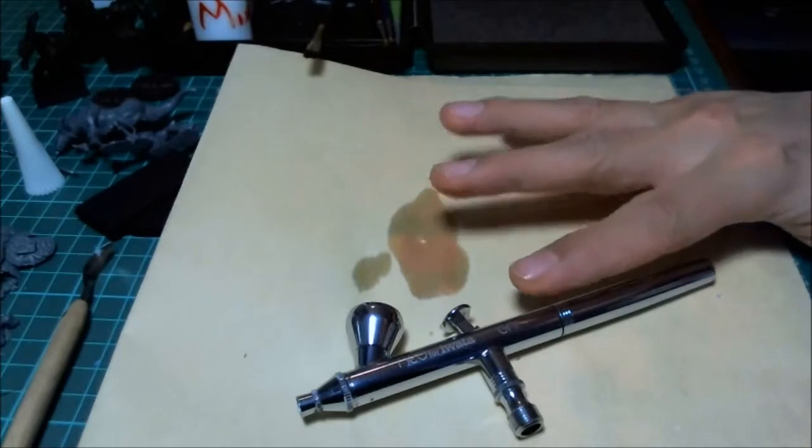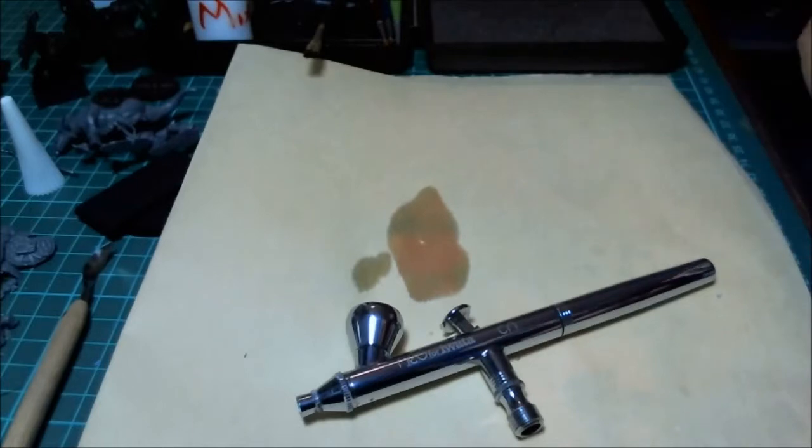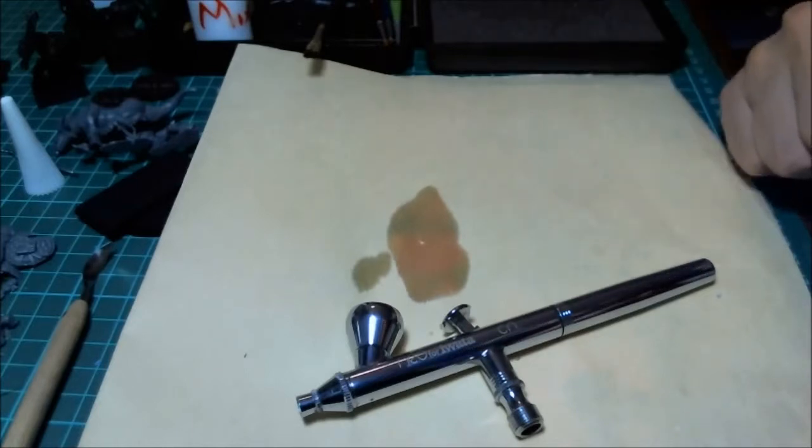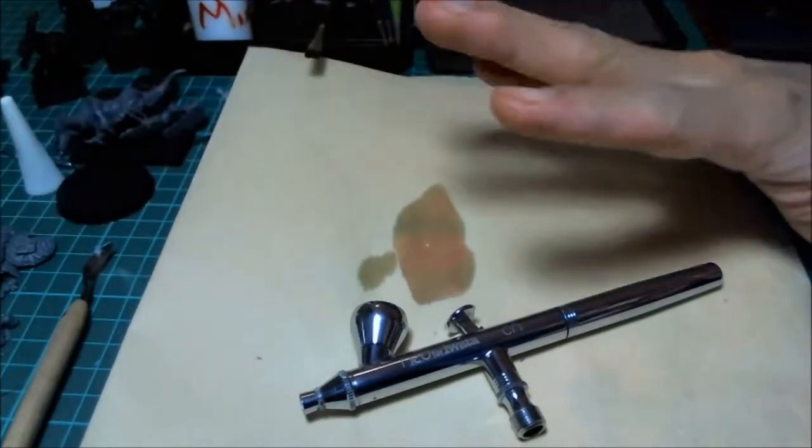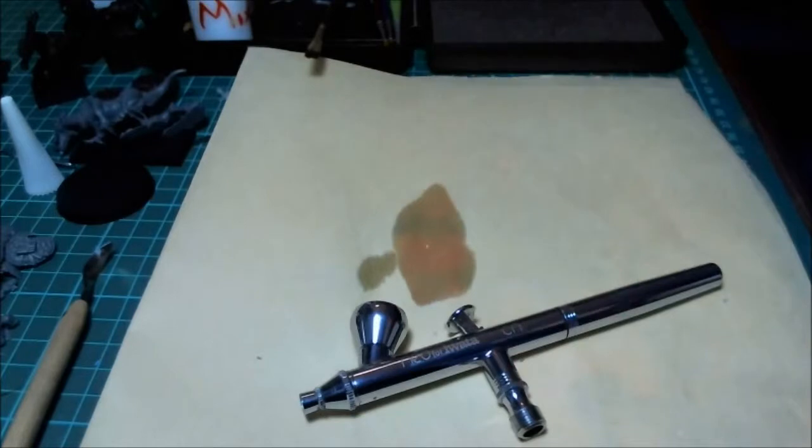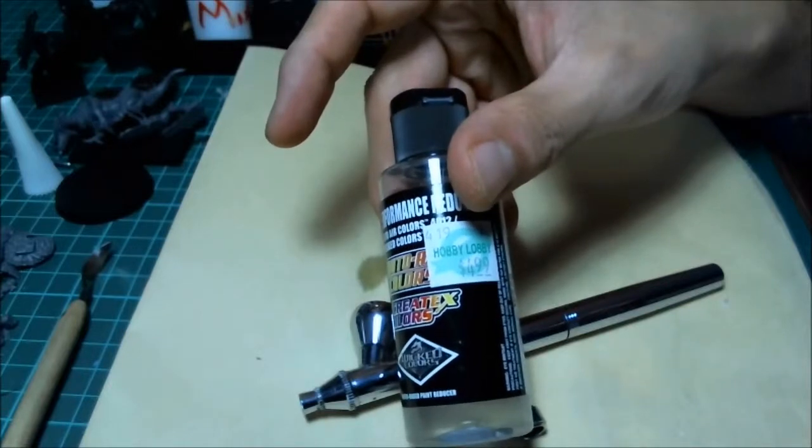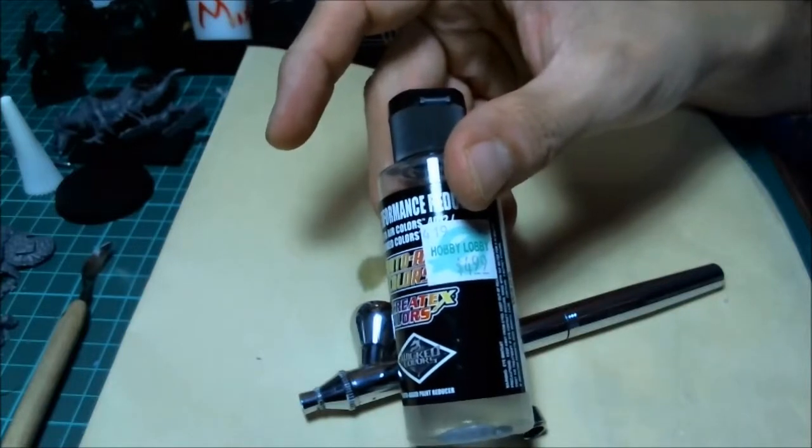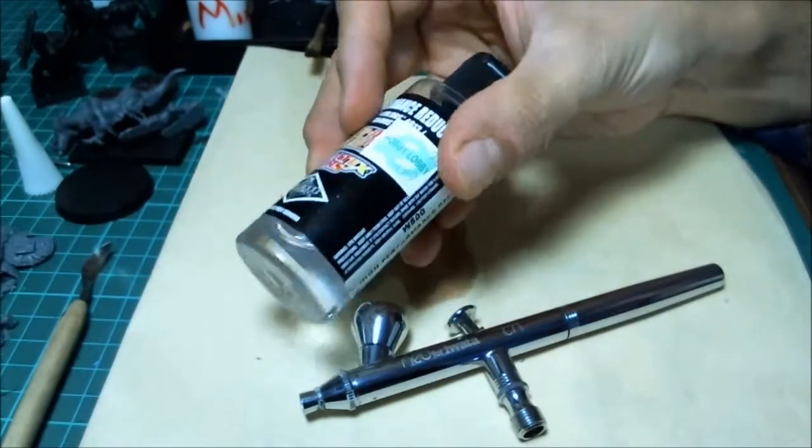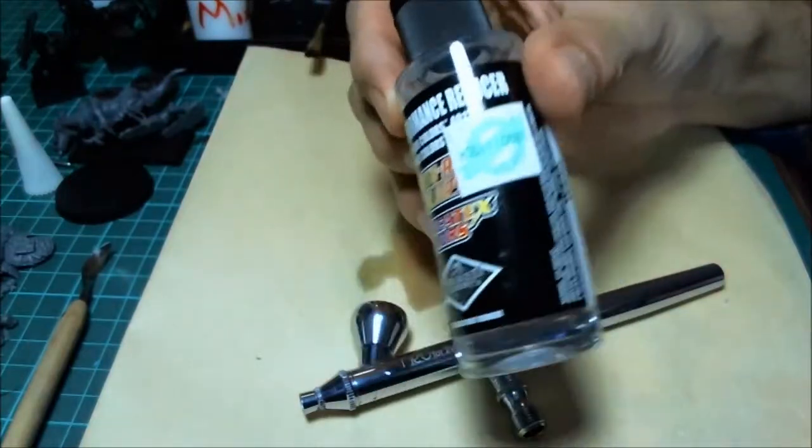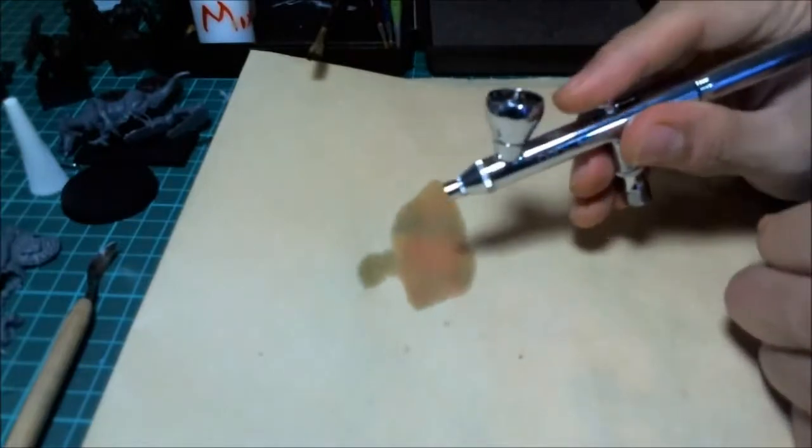If you use anything else—enamels or anything else—you've got to get one of those fancy big huge airbrushing stations with the airway so you don't breathe in all those toxic fumes and kill yourself. For acrylics, I have found—I believe the active ingredient in this thing is probably ammonia because it smells a lot like ammonia. Actually, it's ethanol—it's 2-butoxyethanol, the active ingredient, because it says right there.